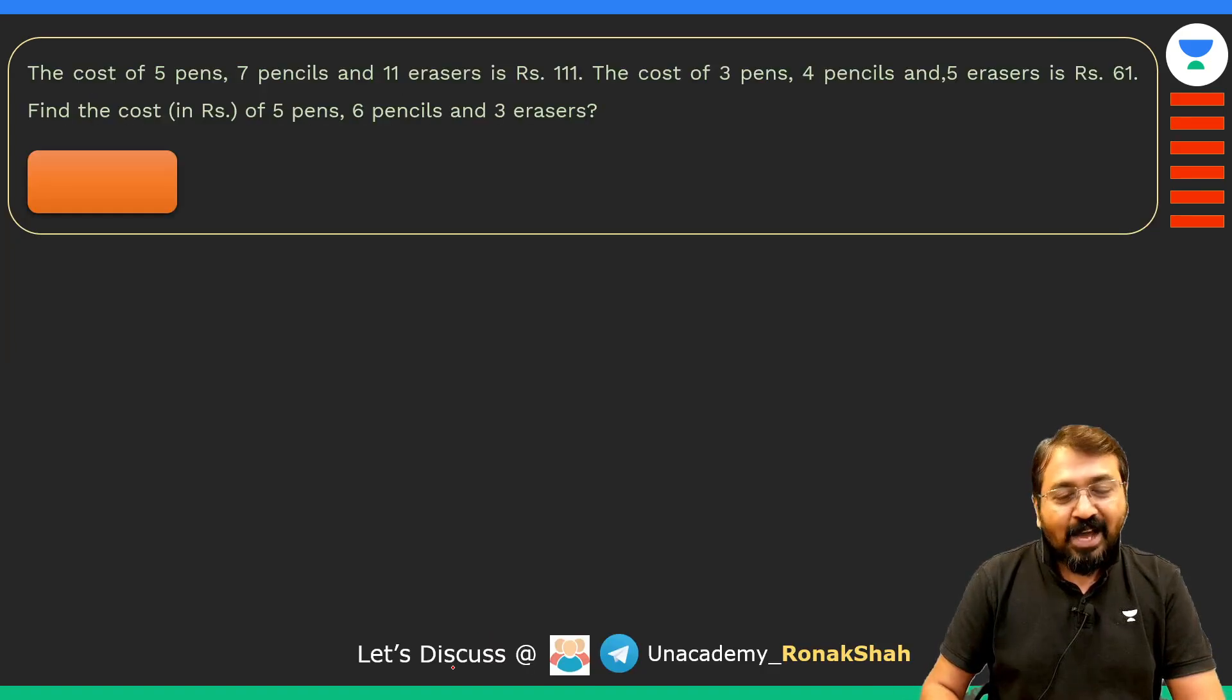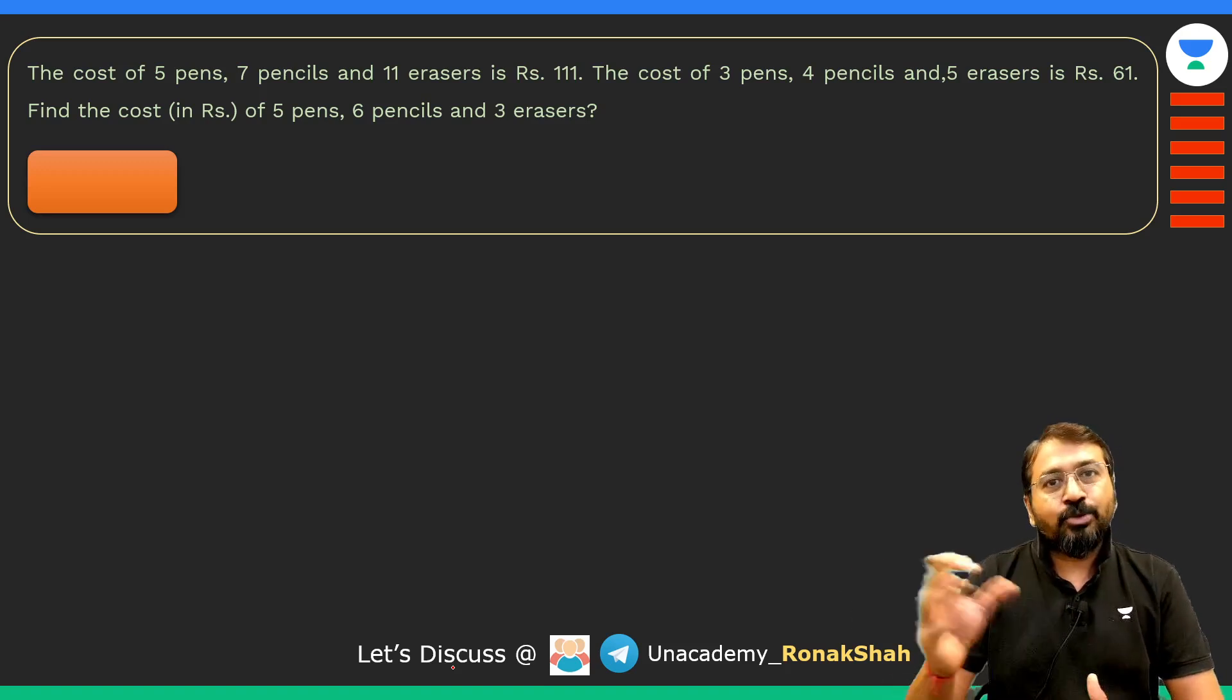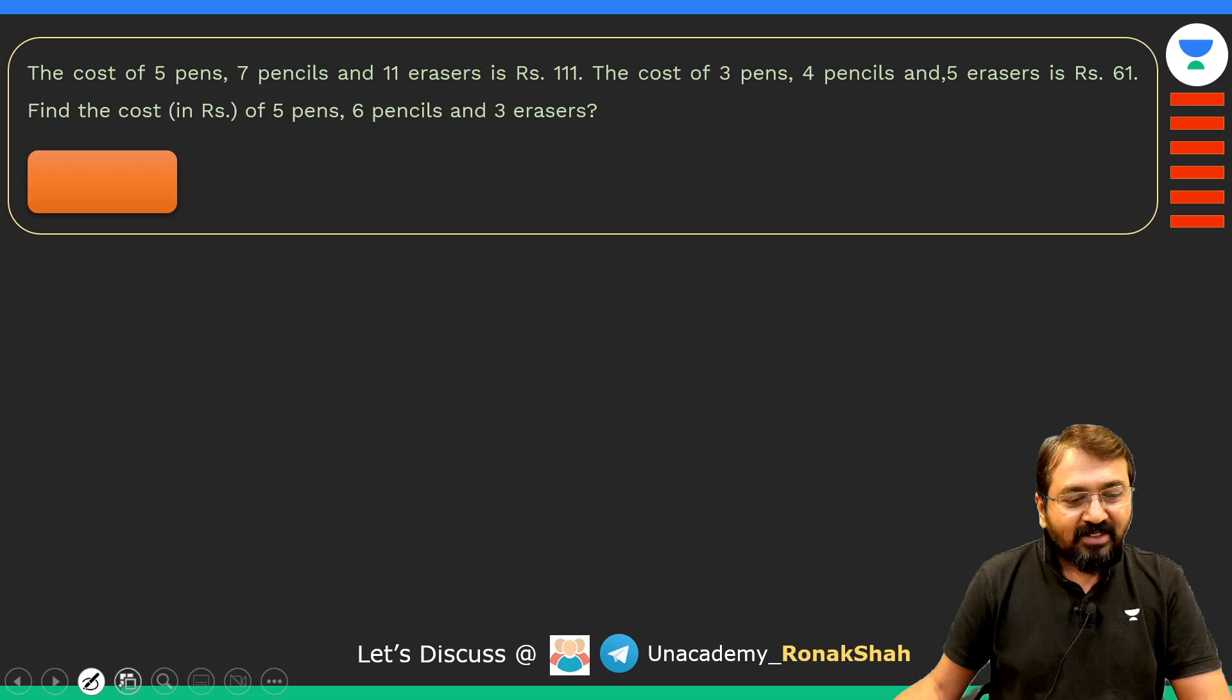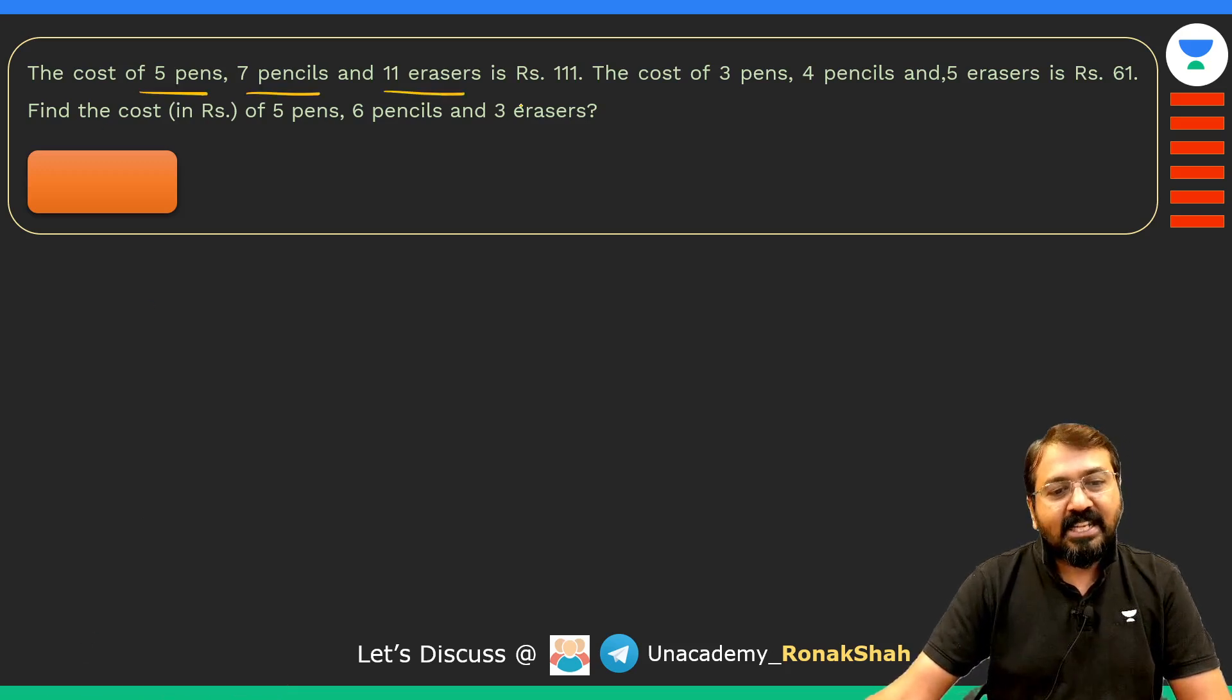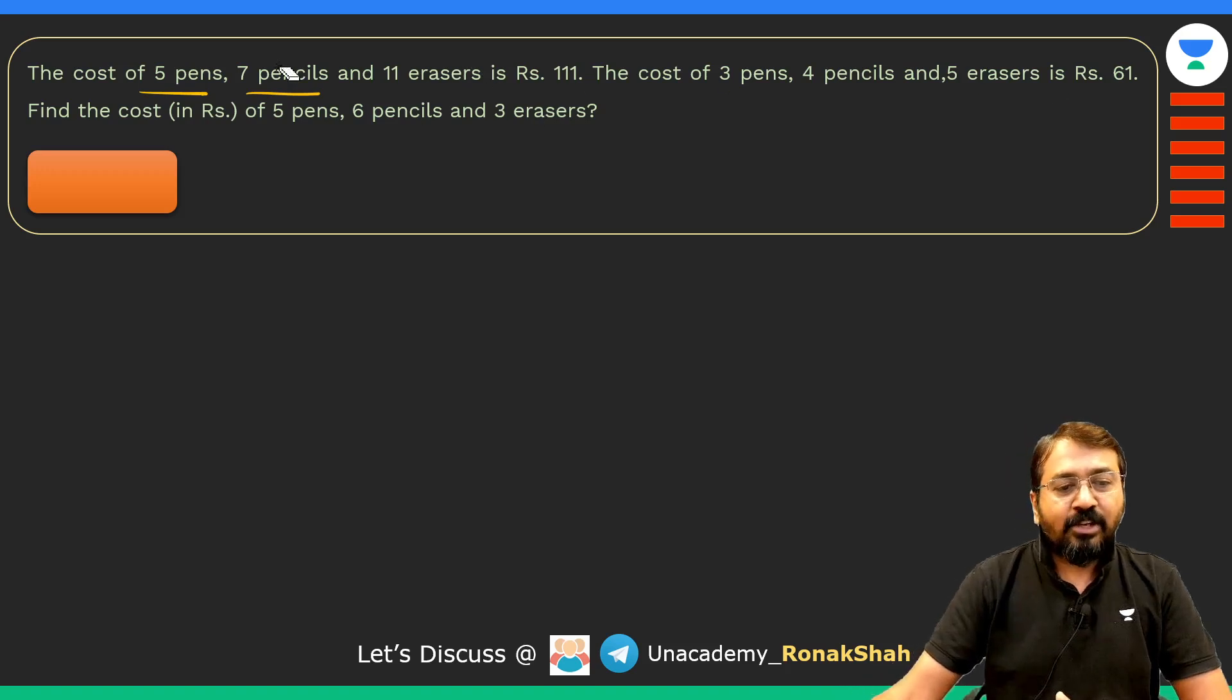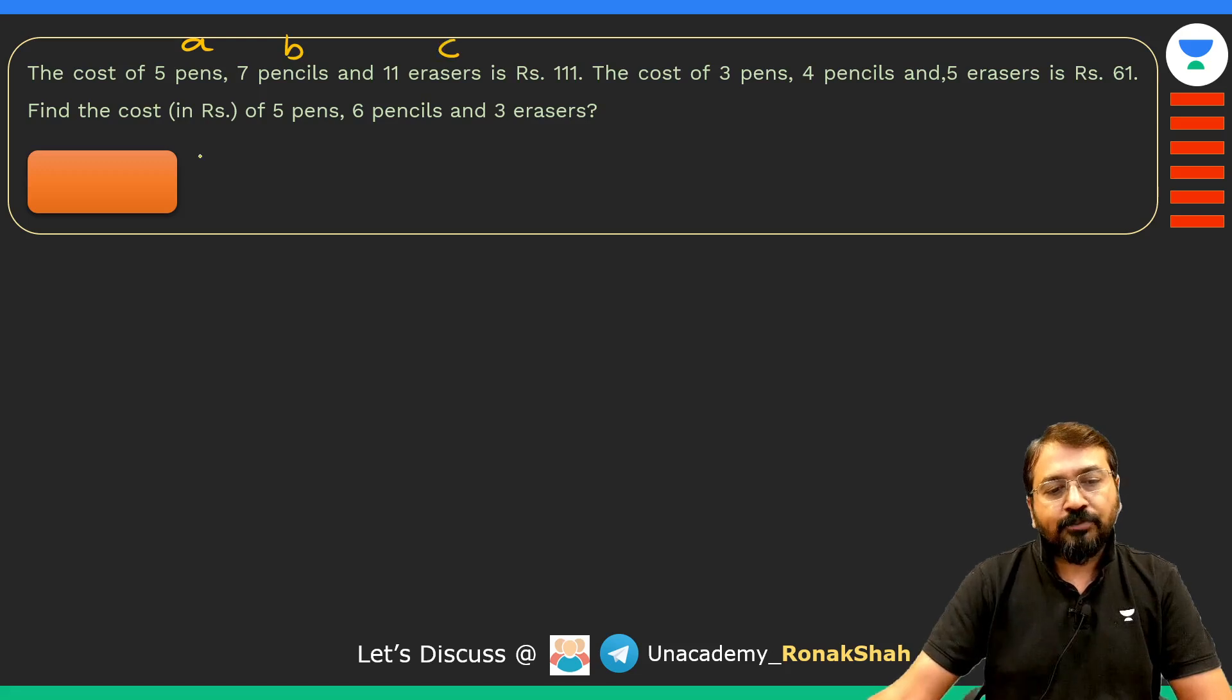Let's look at how to solve such questions. I have taken one worded problem which will eventually convert to the given situation. The question is: the cost of 5 pens, 7 pencils, and 11 erasers is 111, and the cost of 3 pens, 4 pencils, and 5 erasers is 61. You are asked to find out the cost of 5 pens, 6 pencils, and 3 erasers. Let's quickly assume the cost of each pen is a rupees, cost of each pencil as b rupees, and cost of each eraser as c rupees.